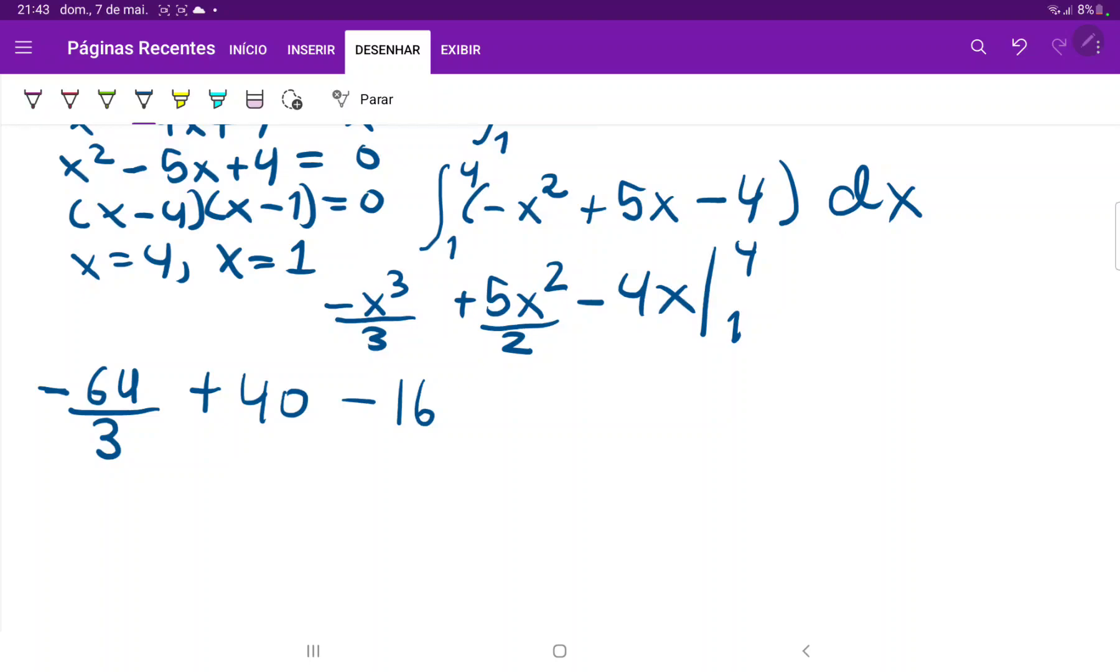And let me just double check that my math is right. And then minus the lower boundary, which is let's apply 1: minus minus 1 over 3 so plus 1 over 3, and then minus 5 over 2, minus minus 4 which is plus 4.